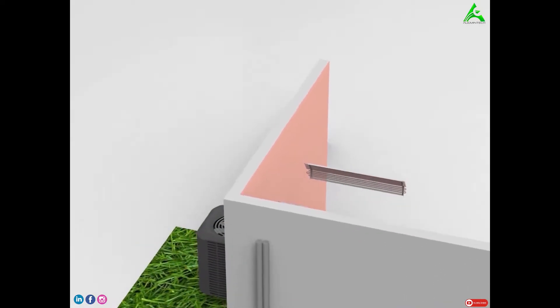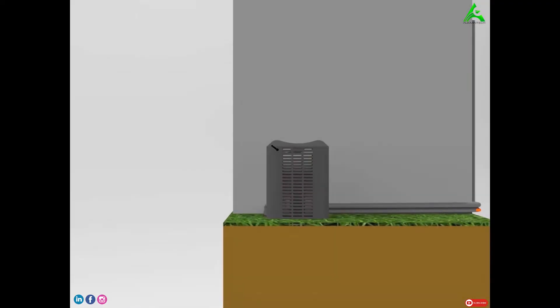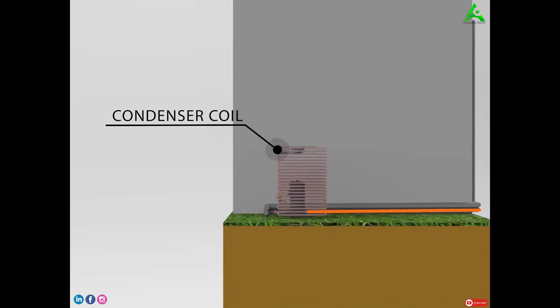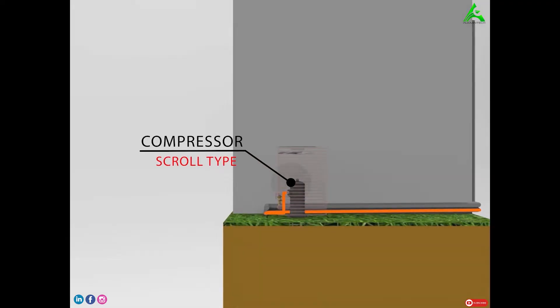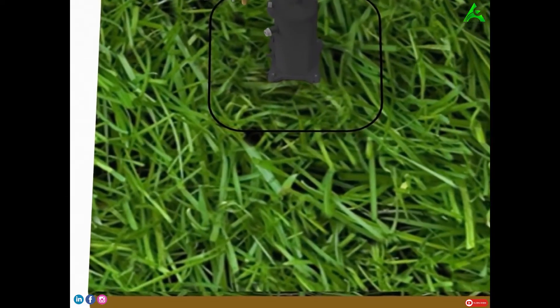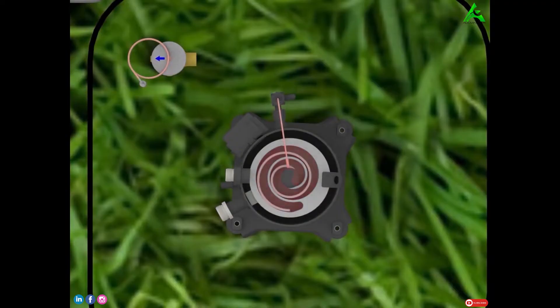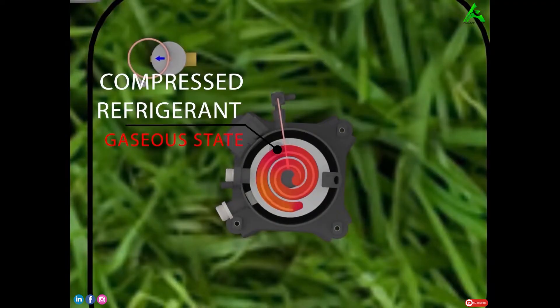flows to the compressor located inside the outdoor unit. The refrigerant is then squeezed between the two scrolls inside the scroll compressor. This increases the pressure and temperature of the refrigerant.